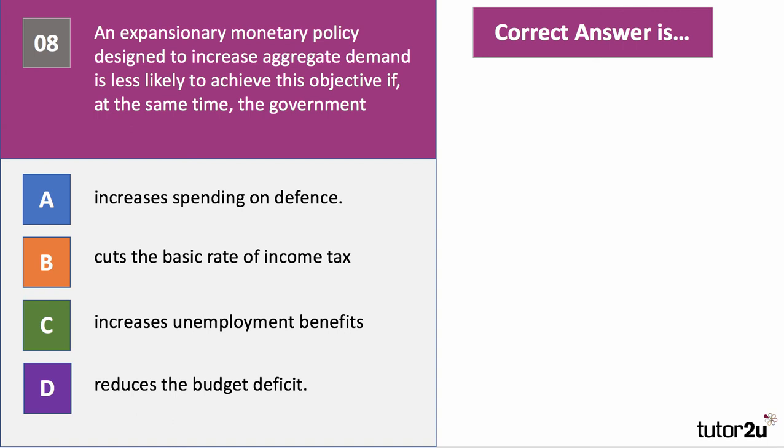The correct answer to question eight is D. Some form of fiscal austerity — maybe a cut in government spending or an increase in tax designed to reduce the size of the fiscal budget deficit — will be a factor holding back the impact of expansionary monetary policy by the central bank.